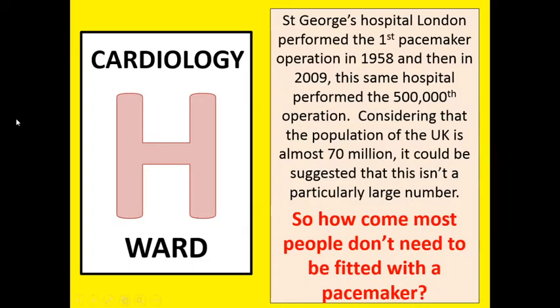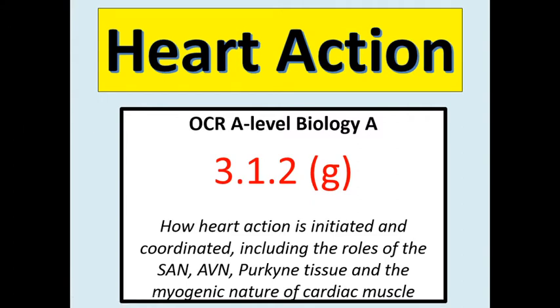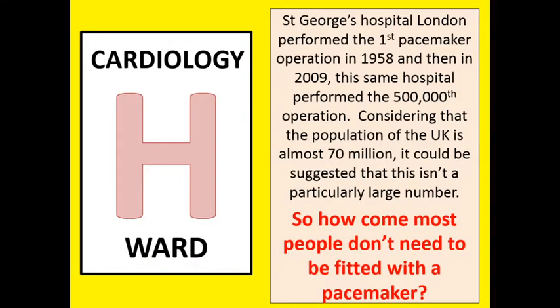Hello Year 12. This lesson is all about heart action. Hopefully you're coming into this knowing how to label a heart with the four main blood vessels, the four main chambers, and the four main valves. The spec point is 3.1.2G — how heart action is initiated and coordinated, including the roles of the SAN, AVN, Purkinje tissue, and the myogenic nature of cardiac muscle.